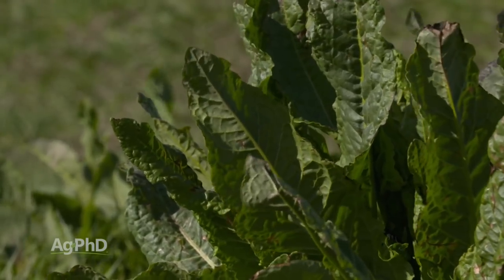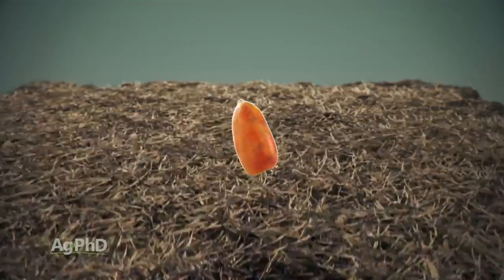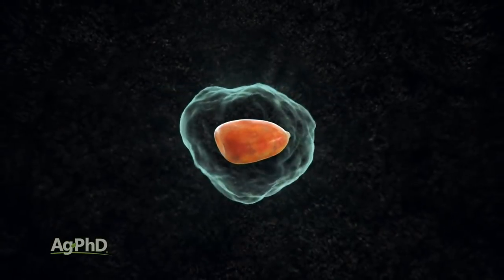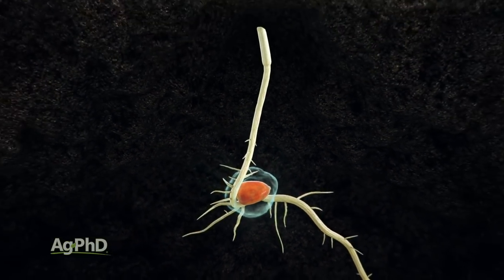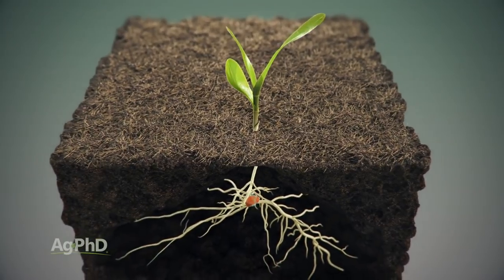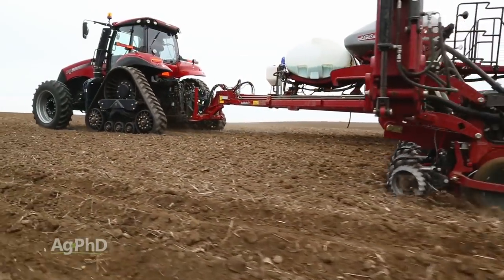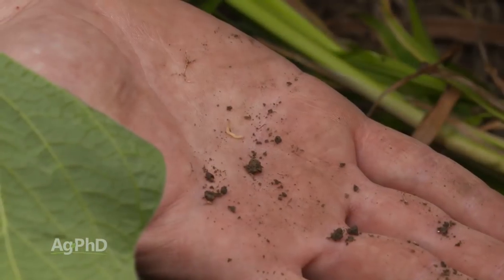Weed control is one issue. The other issue I'm really concerned about is insect control. First of all, if you don't have a corn rootworm Bt hybrid, you've got to use an insecticide in-furrow — or a T-band — to try to control those bugs. There are different ways you can apply it, but you have to do it at planting time. So, planting-time corn rootworm insecticide, because there's no rescue post-emerge.